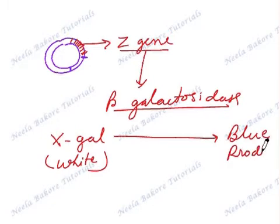And this conversion takes place in presence of beta galactosidase. If this gene Z gets inactivated, now how would this gene get inactivated?